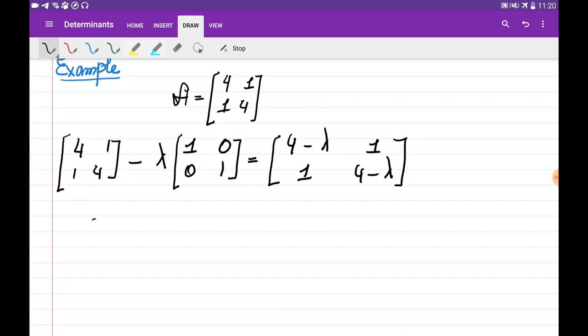To create the characteristic equation, we do this by equalizing the determinant of this matrix to zero. So the determinant of this matrix is (4 minus lambda) squared minus 1, equal to zero.